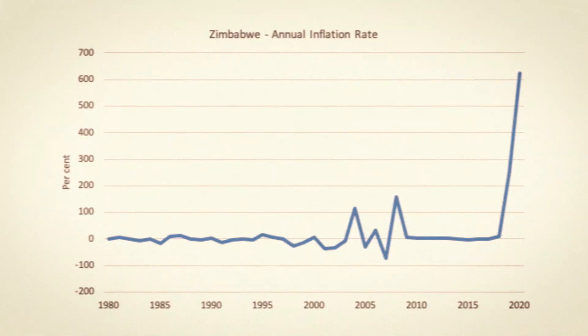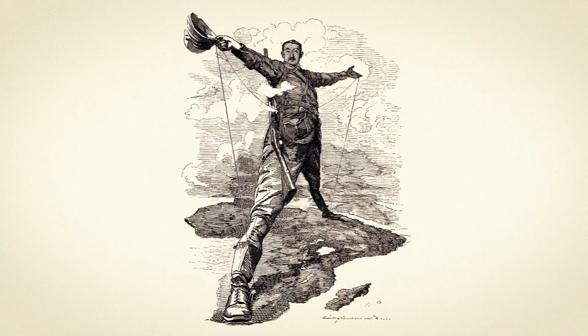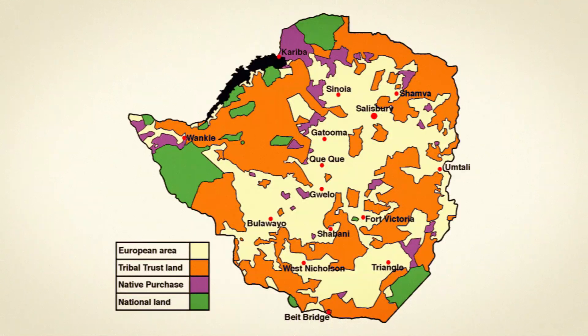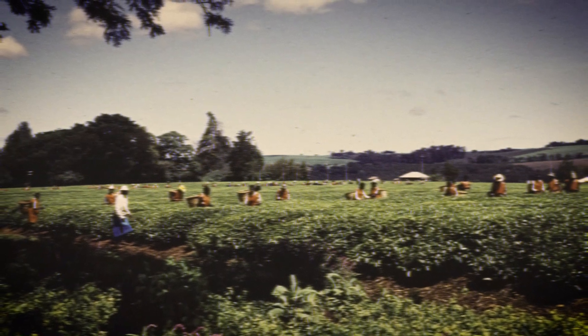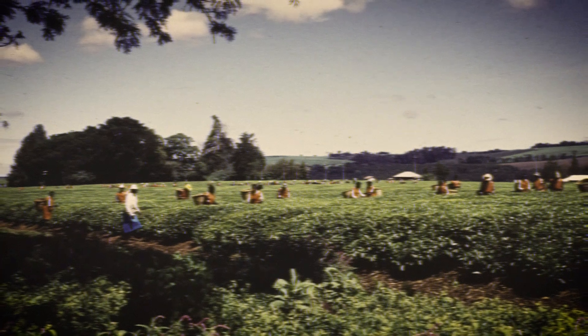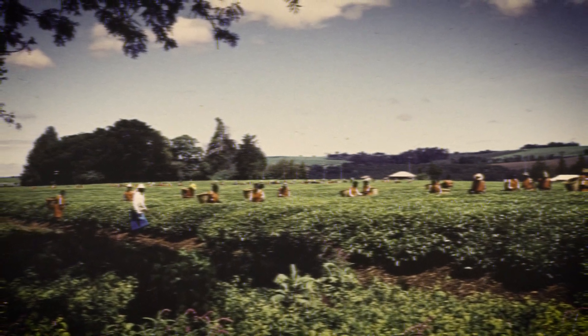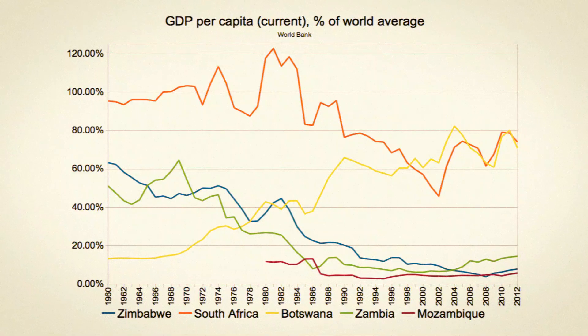Take Zimbabwe as an example. Zimbabwe had hyperinflation, but why? Robert Mugabe wanted to reward his freedom fighters who freed the country from colonial white rulers. During the colonial regime, land equity was dramatically unequal — most of the land was owned by whites. What Mugabe did, for understandable reasons, was a disastrous policy intervention: he gave the white farms, which were highly productive and the food bowl of Africa, to the freedom fighters who knew nothing about farming.